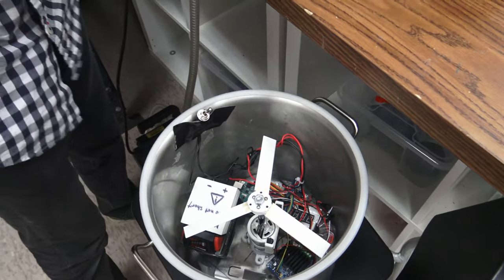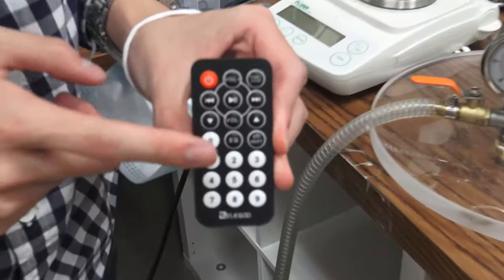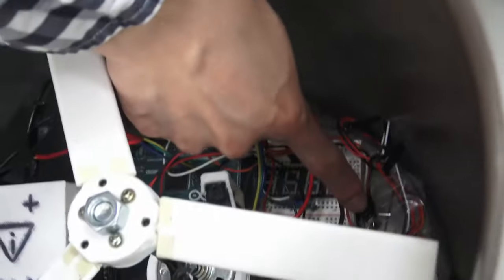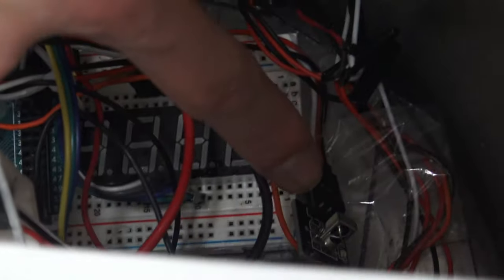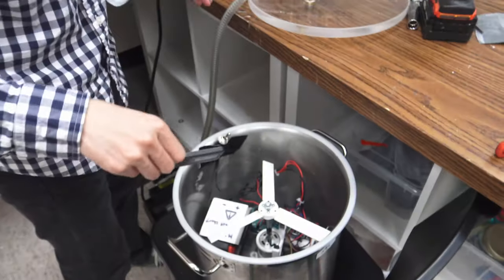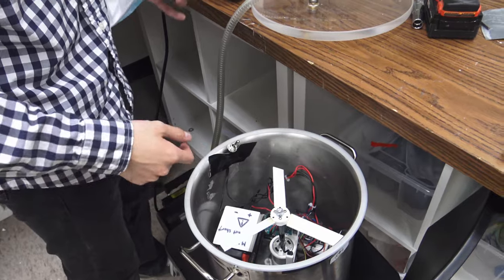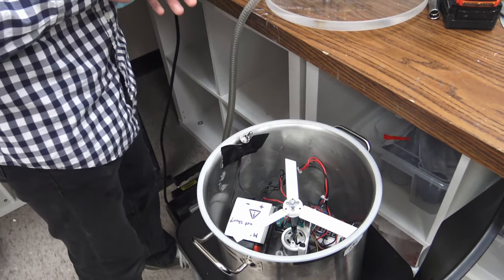And then what's really neat about the system is actually the control system, so I'll show you. So we have this remote control and that interfaces with that IR receiver right there. And we can actually use this to control the speed of this motor while the chamber is on, I'll show you that.